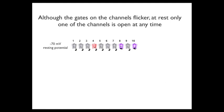Before considering anode break excitation and depolarization block, let's begin by considering the behavior of 10 sodium channels over time while the membrane potential is at minus 70 millivolts and is not changing. Remember that the channels flicker and the gates assume various positions over time. However, the main point is that only one sodium channel is open at any point in time while the membrane is at its resting potential.